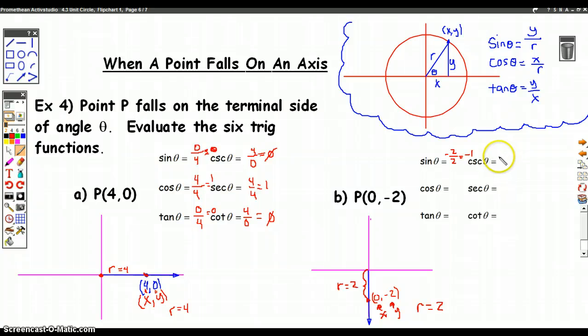Sine is y over r, so it's -2 over 2 equals -1, so cosecant would be 2 over -2 which is also -1. Cosine would be x over r, 0 over 2 which is 0, and secant would be 2 over 0 which is undefined. Tangent is y over x, -2 divided by 0 which is undefined, and cotangent would be 0 over -2 which equals 0.